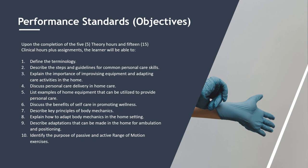Performance Standards and Objectives. Upon completion of the 5 theory hours and 15 clinical hours, plus assignments, the learner will be able to: define the terminology; describe the steps and guidelines for common personal care skills; explain the importance of improvising equipment and adapting care activities in the home; discuss personal care delivery in home care; list examples of home equipment that can be utilized to provide personal care; discuss the benefits of self-care in promoting wellness; describe key principles of body mechanics; and explain how to adapt body mechanics in the home setting.